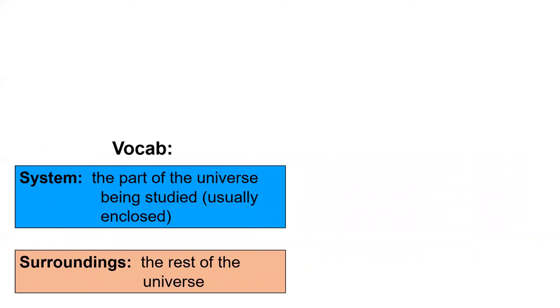I'd like to introduce two final vocab words before we finish this lesson up. System and surroundings. The system is the part of the universe being studied.